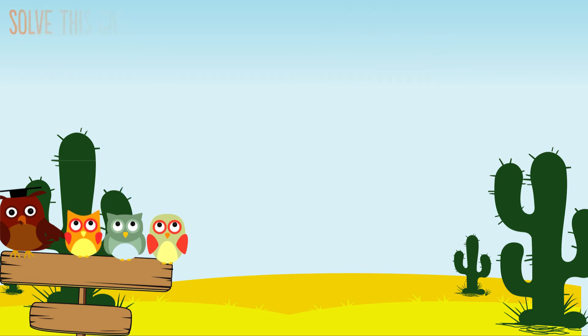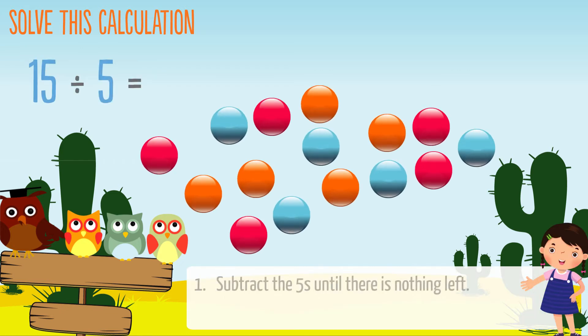Let's solve this calculation: 15 divided by 5. Top tip: subtract the fives until there is nothing left. Our answer is how many times we could take away five. We can draw rings around each group of five circles we subtract.